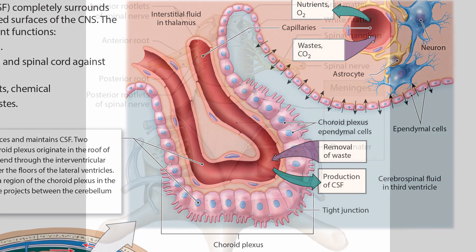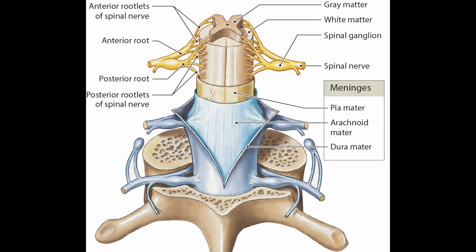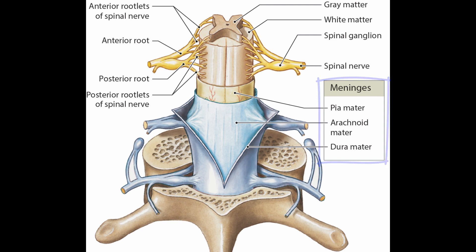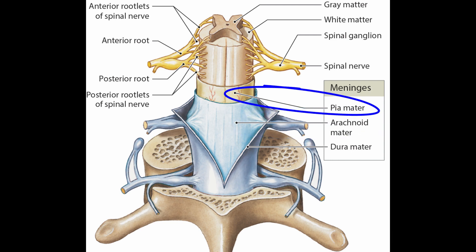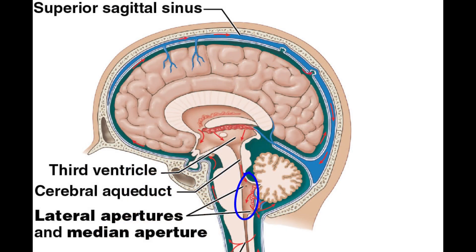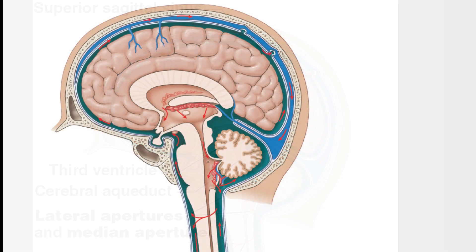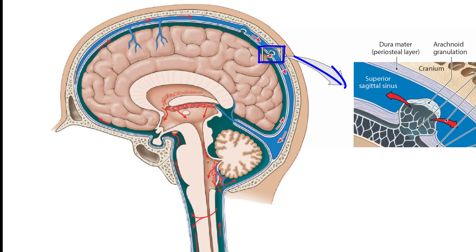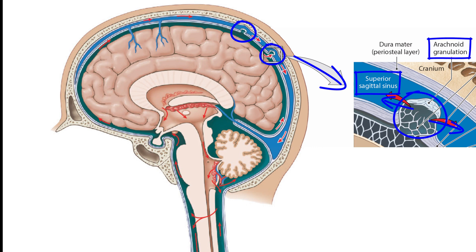Cerebrospinal fluid also circulates within the subarachnoid space. Remember, there are three meningeal layers covering the central nervous system: the outermost dura mater, then the arachnoid mater, and finally the pia mater. The cerebrospinal fluid flows into the subarachnoid space through openings in the fourth ventricle — two lateral apertures and a single median aperture. As the CSF circulates within the subarachnoid space, bathing the brain, spinal cord, and cauda equina, it eventually works its way into the superior sagittal sinus via extensions of the arachnoid mater called arachnoid granulations.